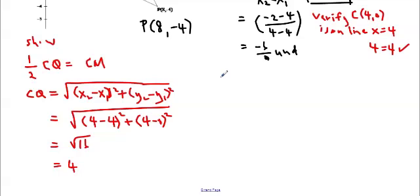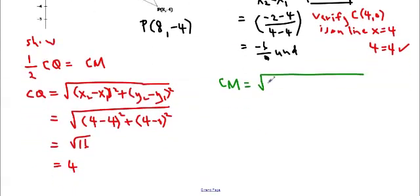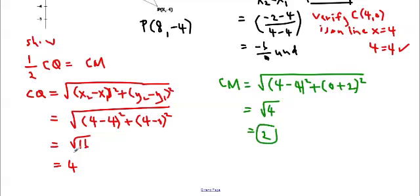And then we'll do CM. I don't need to write the formula, since I wrote it already in this section. So for every question, you only need to write each formula once. And M was 4, negative 2. So we're going to do 4 minus 4 squared and 0 minus negative 2 is plus 2 squared. So this gives us 0 squared plus 2 squared, which is 4, root 4, which is 2.